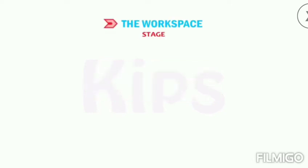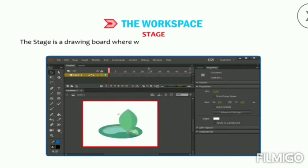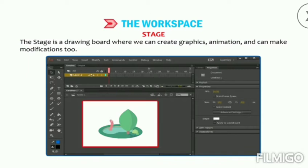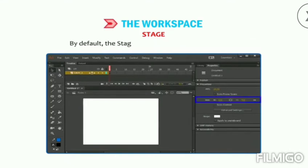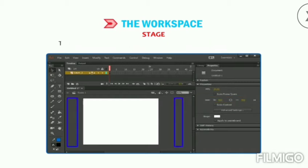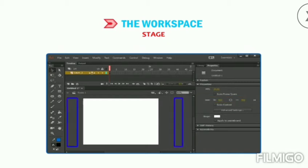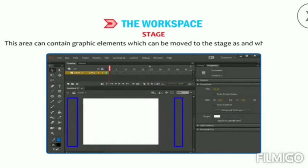The Stage is a drawing board where we can create graphics and animation and make modifications. It is a large white space present at the center of the workspace. By default, the stage dimensions are 550 by 400 pixels. The gray area surrounding the stage is called the Work Area, which can contain graphic elements that can be moved to the stage as required.